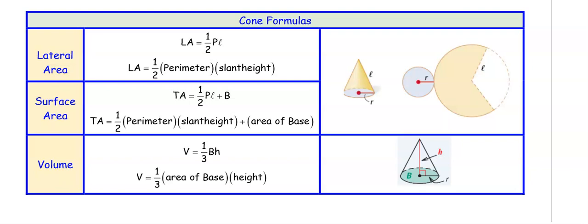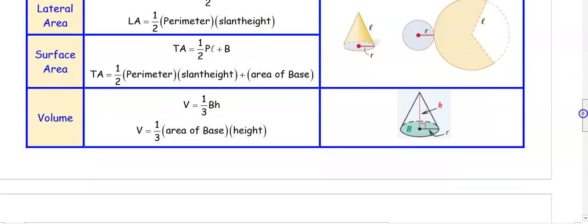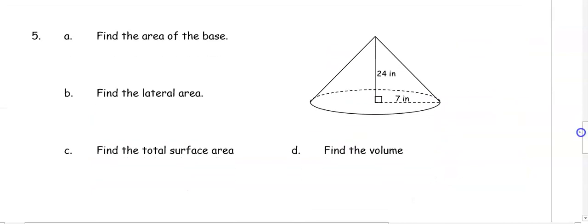Lateral area is going to be one half perimeter times the slant height. Total surface area is your lateral area plus the area of one base. Your volume is one third the base area times the height. Remember that your slant height goes along the edge of the cone, and the height goes from the vertex to the center of the base.